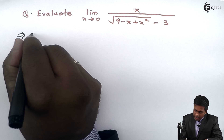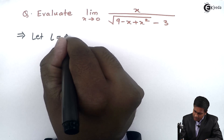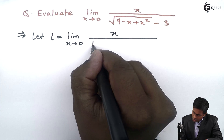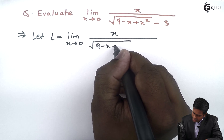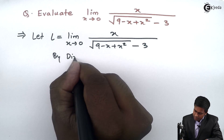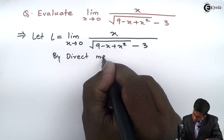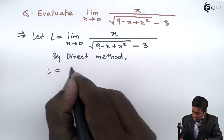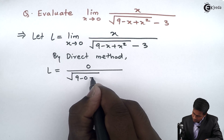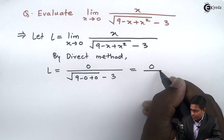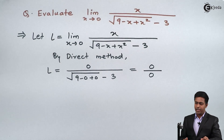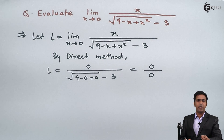I am considering this given limit as L, which is the limit x tends to 0 of x upon square root of 9 minus x plus x squared, minus 3. By direct method, we get L as 0 in the numerator, and in the denominator: 9 minus 0 plus 0 gives square root of 9, which is 3, so 3 minus 3 gives 0. So we are getting 0 upon 0 — the indeterminate form.